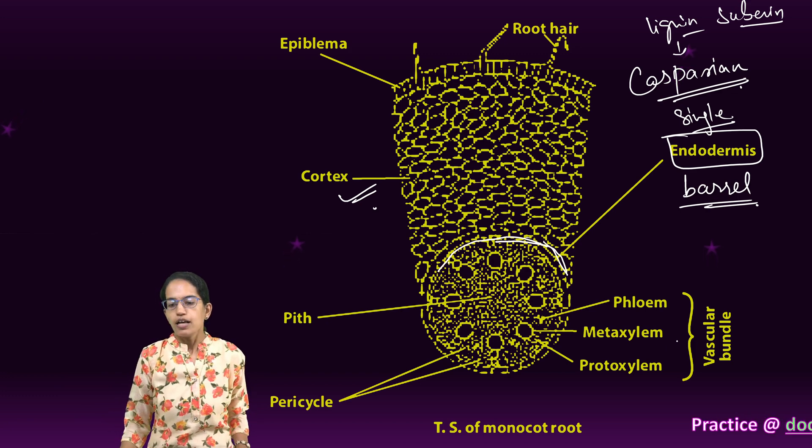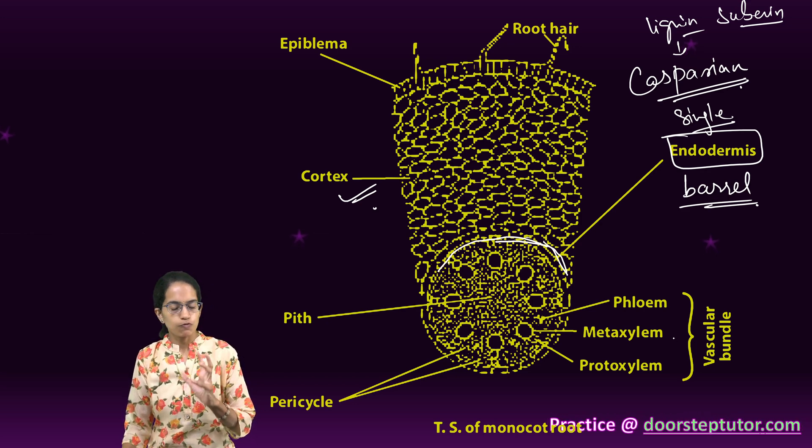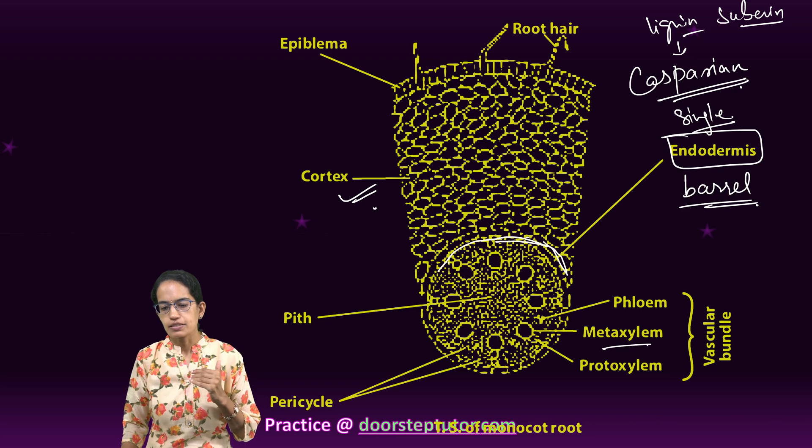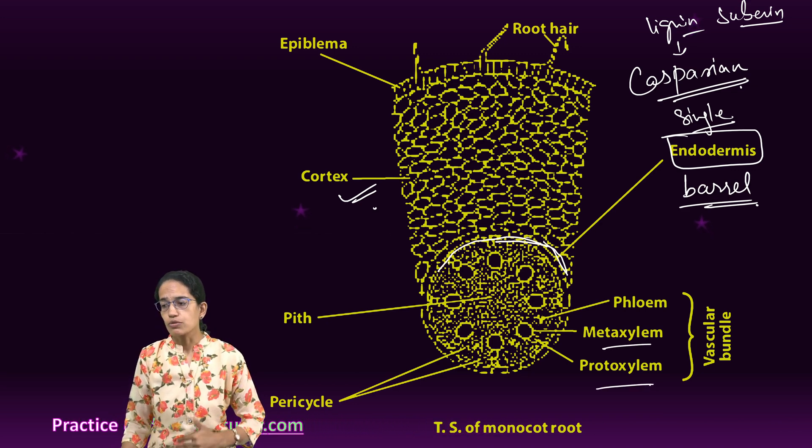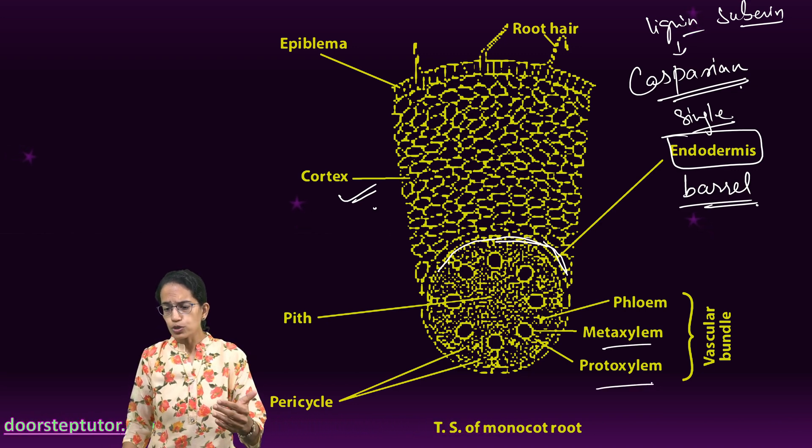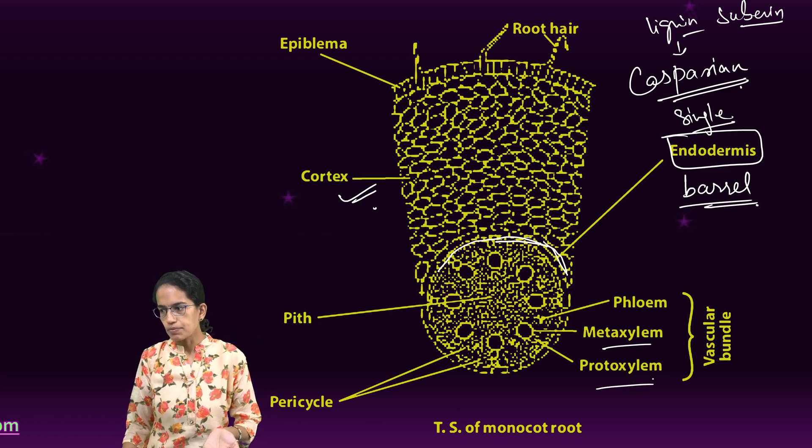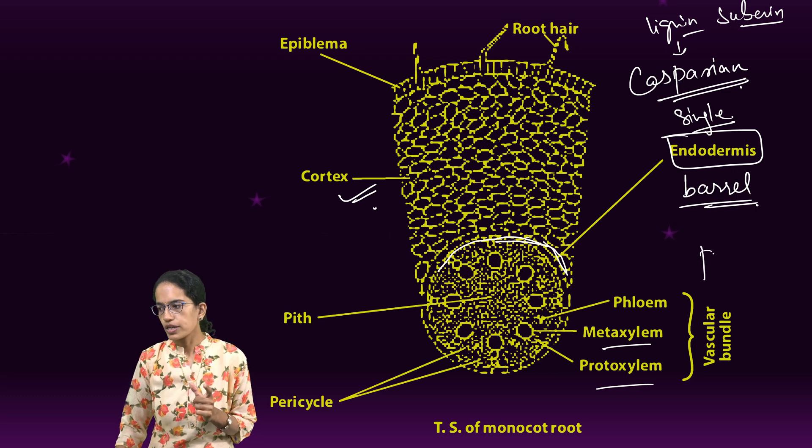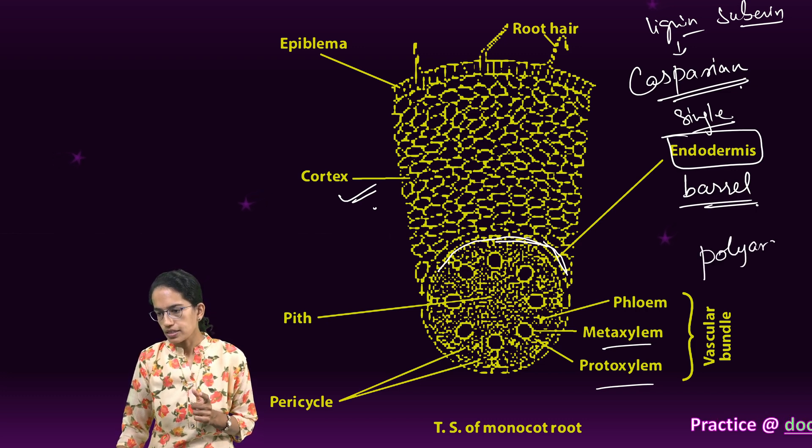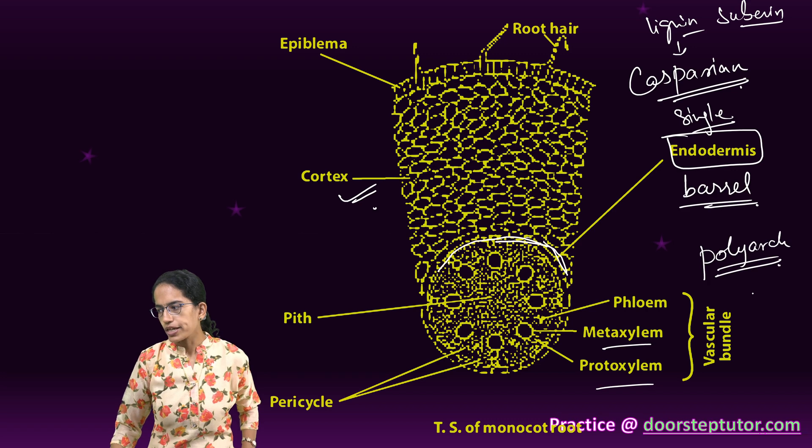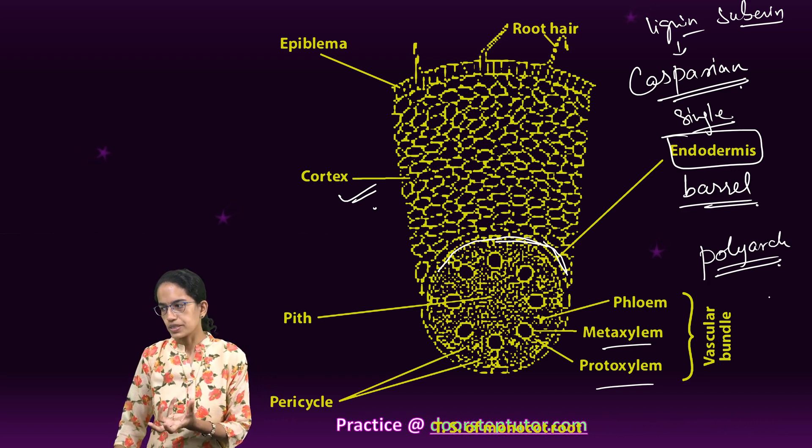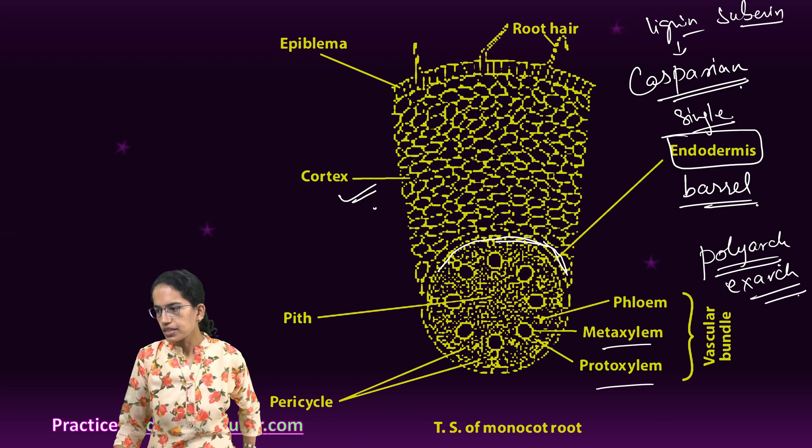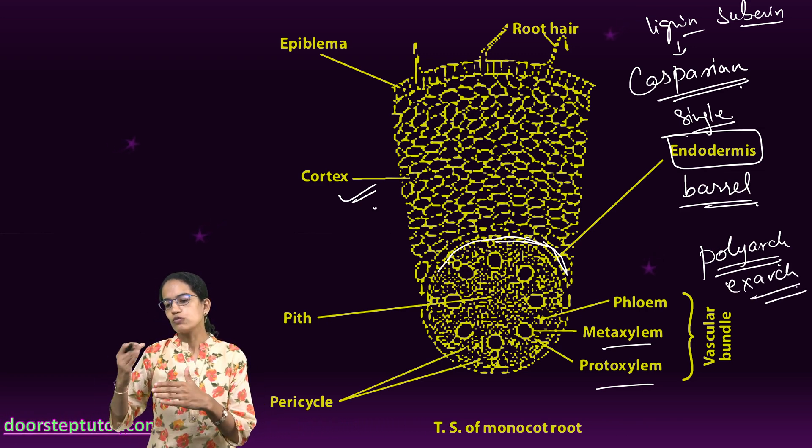The next is vascular bundle. Vascular bundle is formed of phloem and xylem. Xylem is divided as metaxylem and protoxylem. Protoxylem surrounds the metaxylem - protoxylem is outside the metaxylem. The xylem in the case of monocot is polyarch and exarch. Exarch means the protoxylem is outside the metaxylem.